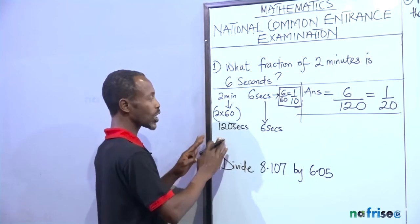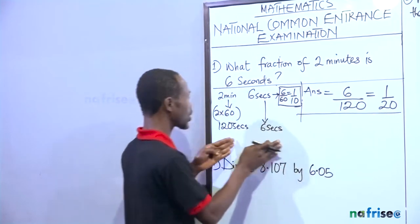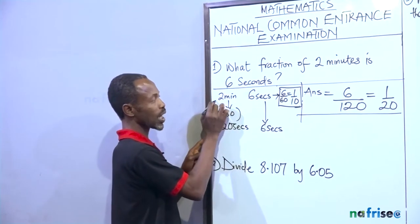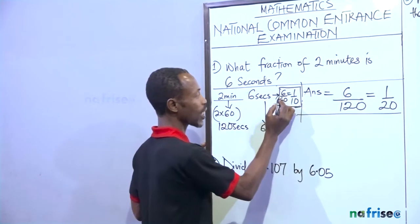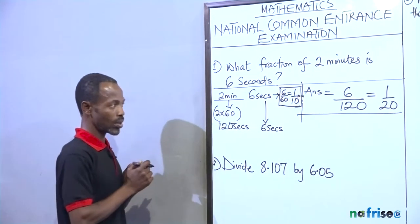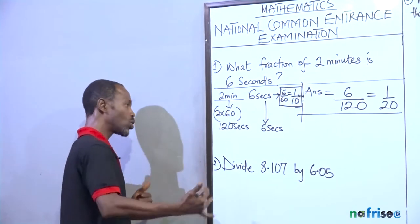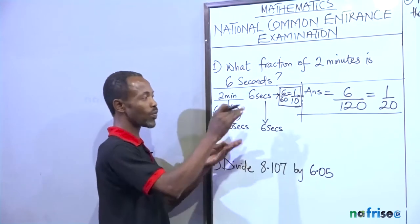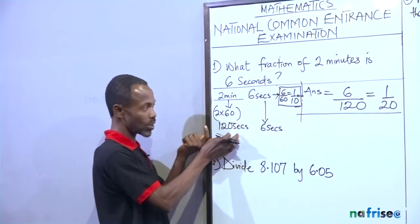So if we don't want to change all of that to seconds, and we decide to take it to minutes, then you know that 2 minutes will stand as 2 minutes, and 6 seconds becomes 1 over 10 minutes. So you can also take it like this and say, okay, the small one over the big one.